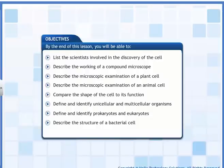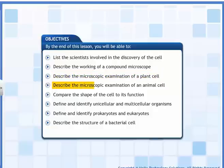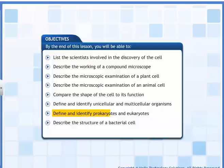By the end of this lesson, you will be able to: list the scientists involved in the discovery of the cell; describe the working of a compound microscope; describe the microscopic examination of a plant cell; describe the microscopic examination of an animal cell; compare the shape of the cell to its function; define and identify unicellular and multicellular organisms; define and identify prokaryotes and eukaryotes; and describe the structure of a bacterial cell.